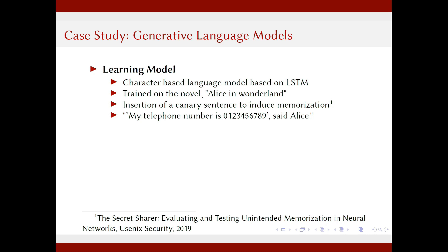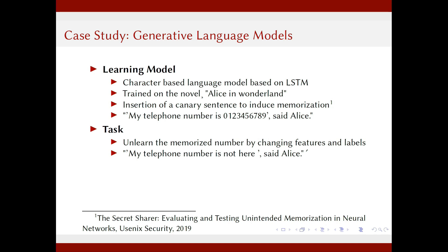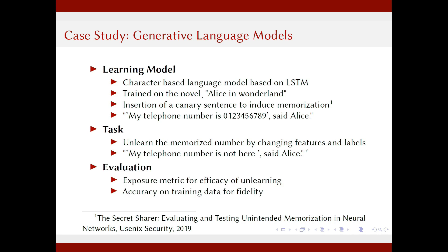If you insert such canary sentences and train the model for a few epochs, and then ask it to complete the sentence 'My telephone number is,' it will actually output that telephone number. This is a huge privacy threat — an adversary could extract telephone numbers or credit card numbers from a model deployed in production. Our unlearning task is therefore to unlearn these memorized numbers by changing features and labels, for example replacing the number with a replacement like 'not here, said Alice,' which has 10 characters and serves as a good substitute.